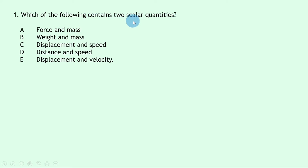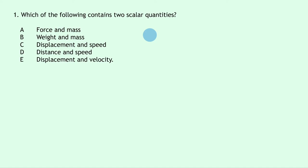Question 1 asks which of the following contains two scalar quantities. We have force and mass, weight and mass, displacement and speed, distance and speed, and displacement and velocity. To answer this we need to remember what a scalar is — a scalar quantity has a magnitude or size only, it doesn't have a direction. Force is a vector, so option A is out.